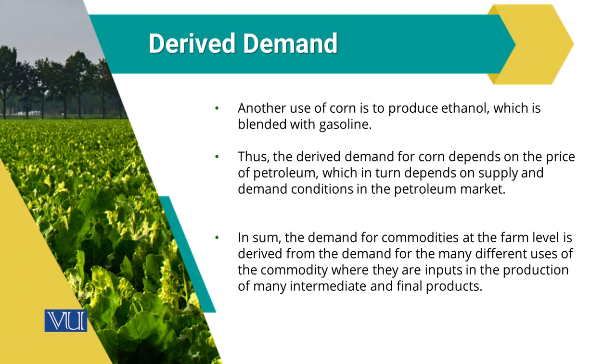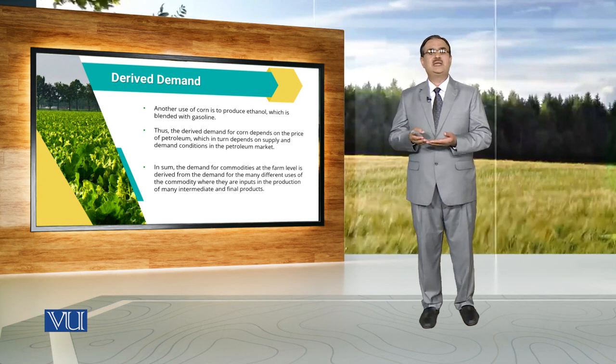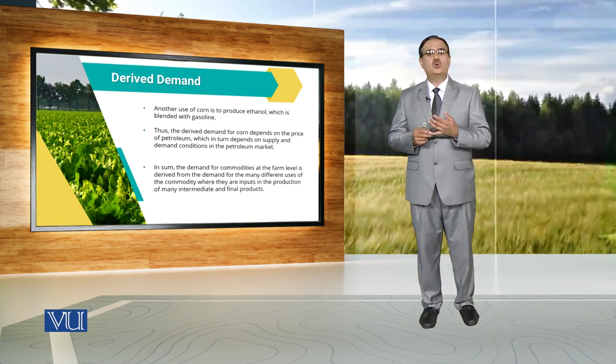To summarize: demand for commodities at farm level is derived from the demand arising from many different uses of the commodity — where they are used as inputs in the production of many intermediate and final products. For example, when we talked about poultry, derived demand was generated when poultry meat was used to produce some other output, such as ready-to-cook food items.